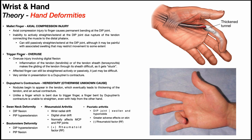An important thing with trigger finger is that the affected finger can still be straightened actively or passively. Just because the finger gets stuck doesn't mean you can't straighten it with enough effort. There might be a little popping that occurs as it forces itself through that tendon sheath, but you can still actively and passively straighten it.